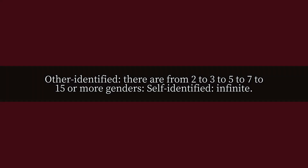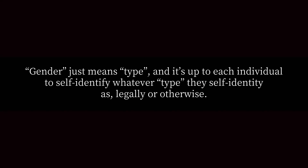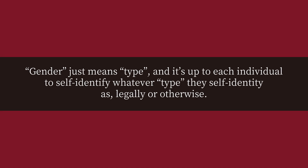How many genders are there? Other-identified: there are from 2 to 3 to 5 to 7 to 15 or more genders. Self-identified: infinite. Gender just means type, and it's up to each individual to self-identify whatever type they self-identify as, legally or otherwise.